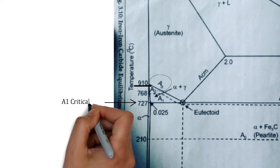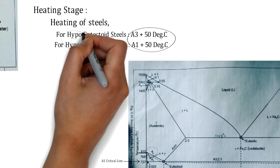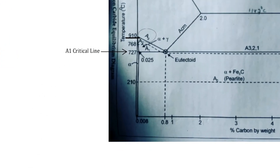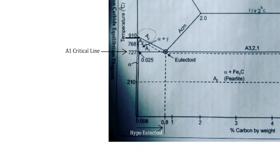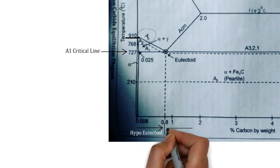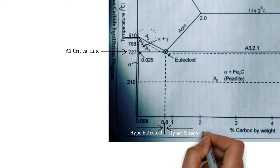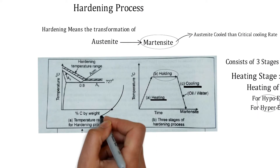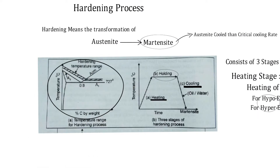Hypo-eutectoid steels have a carbon percentage less than 0.8%, whereas if the percentage of carbon is more than 0.8% it is considered a hyper-eutectoid steel. As shown in this image, hypo and hyper-eutectoid steels are heated above A3 and A1 plus 50°C respectively.